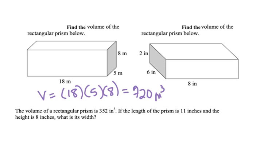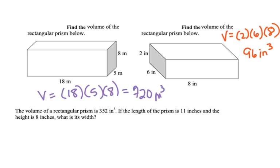Find the volume of the rectangular prism. So our volume would be length times width times height, so 2 times 6 times 8. We put that in our calculator, and we're going to get 96 inches cubed.